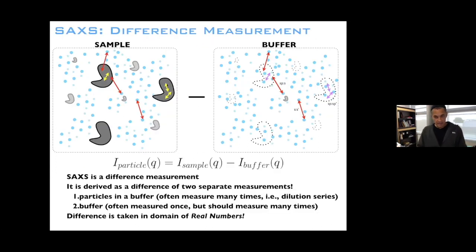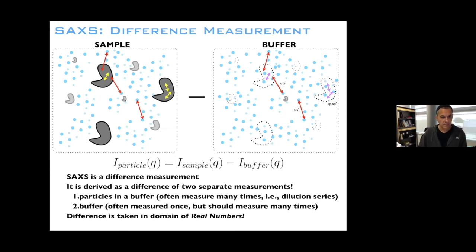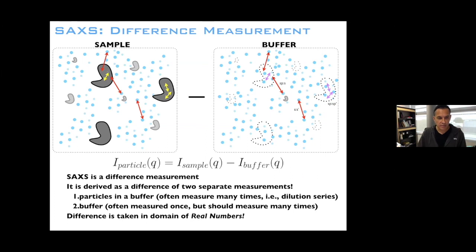If you change temperature or add a ligand and the distribution of conformations changes, then the P(r) distribution should change. When we do a difference measurement in SAXS, x-rays hit your protein particle, and you get scattering off all the buffer and off the protein. You subtract that from a buffer measurement — what's missing in the buffer is essentially the particle, but the particle has its excluded-volume 'ghost' complement.